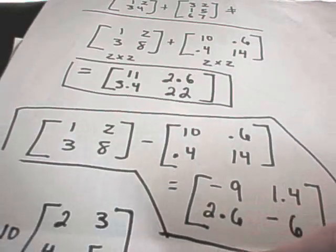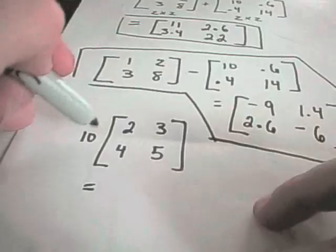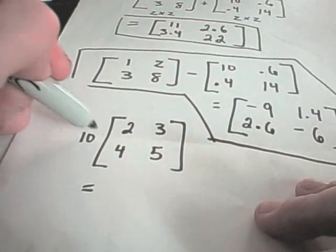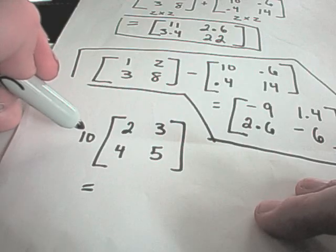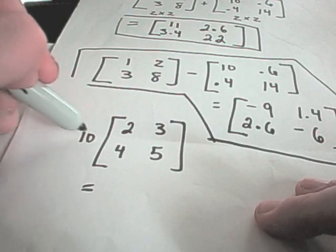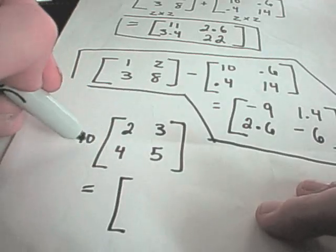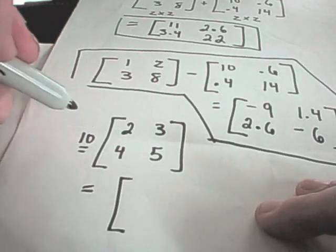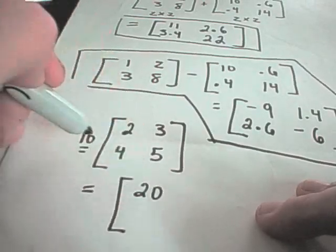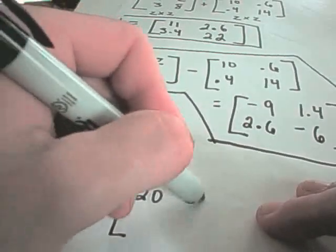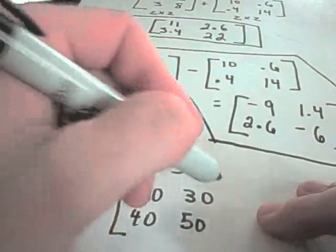The last thing, not so bad, is if you multiply a matrix by a constant. All you have to do in this case is whatever number's out front. And notice this is different than multiplying matrices. Now you're multiplying just a constant to a matrix. And all you do, whatever number's out front, you just multiply every entry by that number. So 10 times 2 is 20. 10 times 3 is 30. 10 times 4 is 40. 10 times 5 is 50.